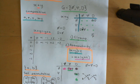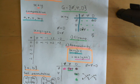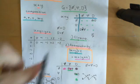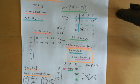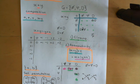Secondly, it needs to obey the associative property, which is that when you compose three things together, it doesn't matter where you put the brackets. Because this composition law only tells you how to compose two elements together, so when you're composing three elements together you have to split it up using brackets. Associativity tells you that it doesn't matter where you put the brackets.